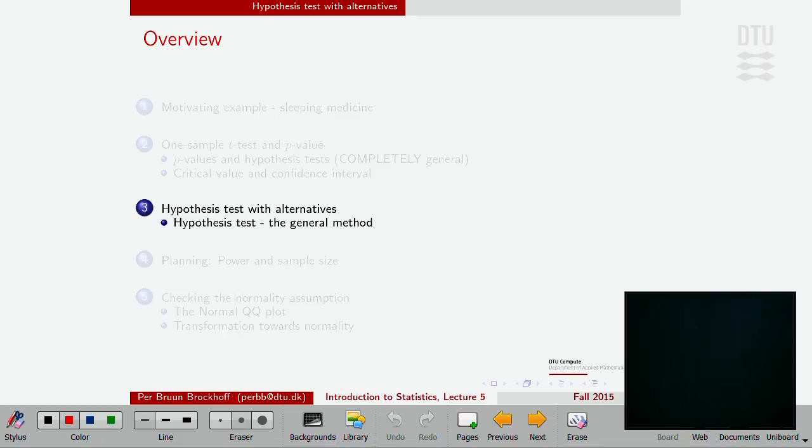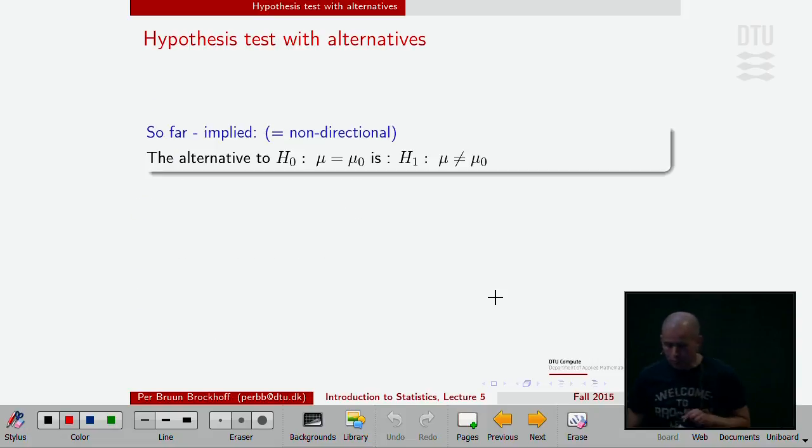I'll do one more thing before the break because we have taken one thing for granted so far in our hypothesis test talk and we have to realize that that's not always given to us for granted. I call it hypothesis test with alternatives. Actually, what we just did also had alternatives, we just didn't talk about it. Now we talk about it.